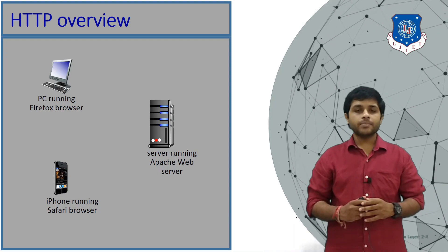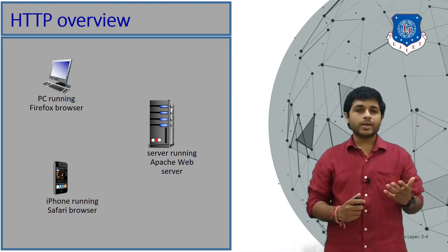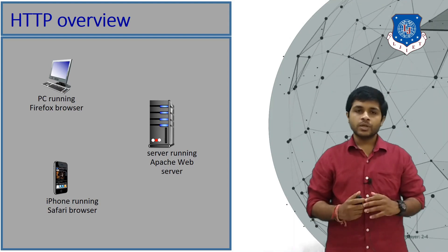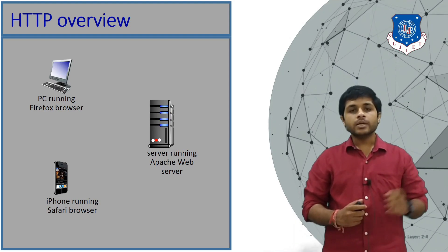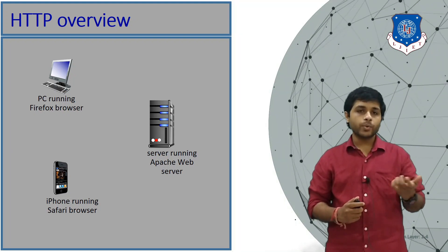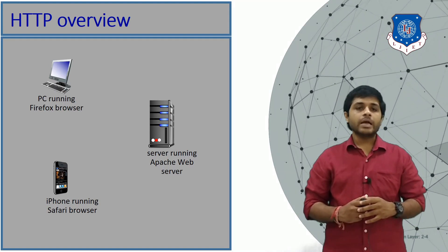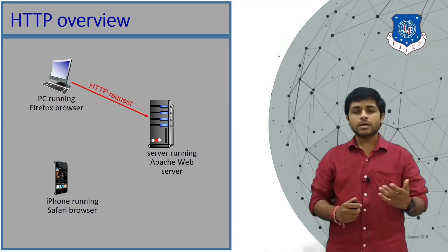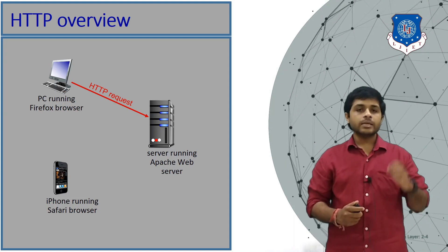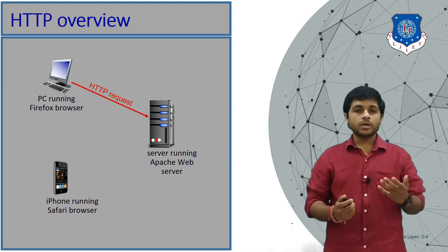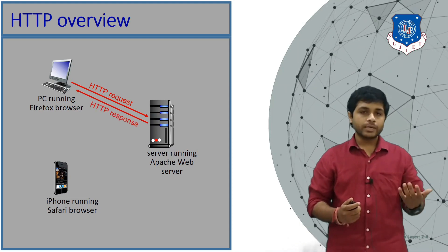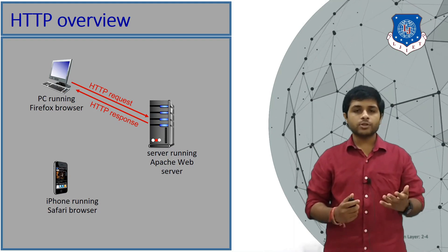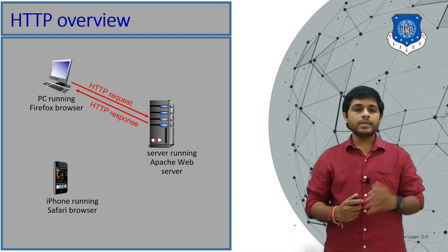You can see an example with a PC and a server — you can access the server using a computer or a mobile phone. When you type www.google.com, your computer generates an HTTP request and that request is sent to Google's server. When the server receives the request, it knows the computer is trying to open the website, so the server replies to that device with the data.